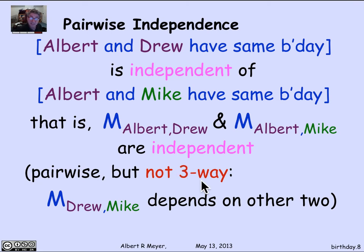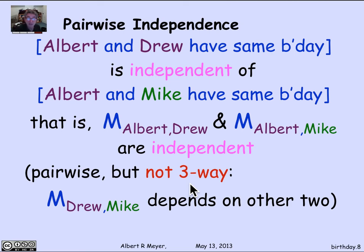Notice that these events of pairwise matching are certainly not three-way independent. If I know that Albert and Drew have the same birthday and that Albert and Mike have the same birthday, I absolutely know with certainty that Drew and Mike have the same birthday. So this is a basic example where you have pairwise independence but not three-way independence, assuming that Albert, Drew, and Mike are all uniform in what birthday they have.